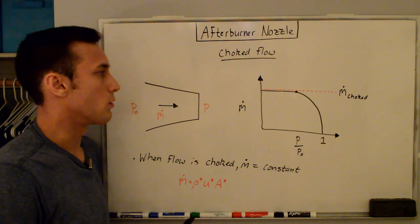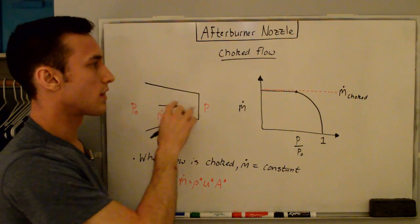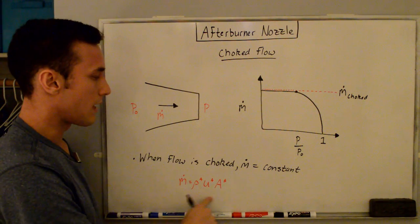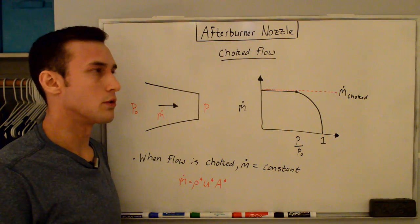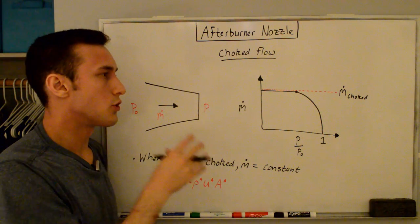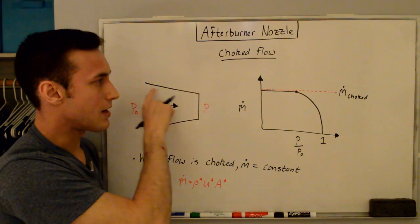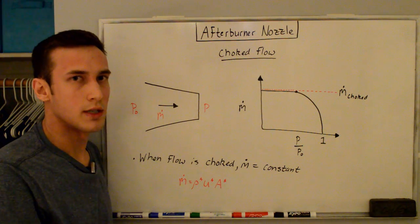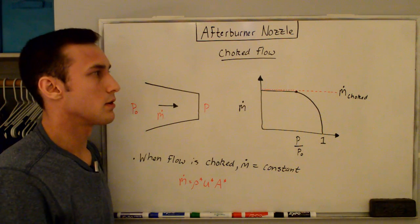If the nozzle is not choked, you can't use the star state to compute the actual mass flow rate, because the star state becomes just a fictitious reference state — not what's actually happening at the throat. The reason we want choked flow is that the major component of thrust is the exit velocity, and to maximize exit velocity in a converging nozzle, you want choked flow. In a normal afterburning engine, a converging-diverging nozzle is used to get even higher velocities.